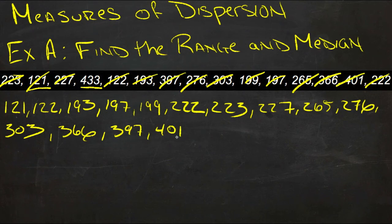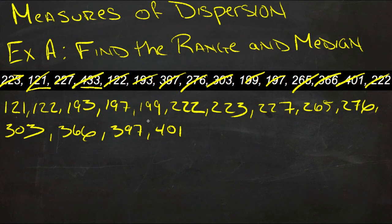Okay, now we have them all in order from smallest to largest. That is important because we need them in order to find the median, and we want to make sure that we have all the numbers accounted for. Oh, looks like I missed one — good thing I checked them off. See, 433 — that's why I do that.